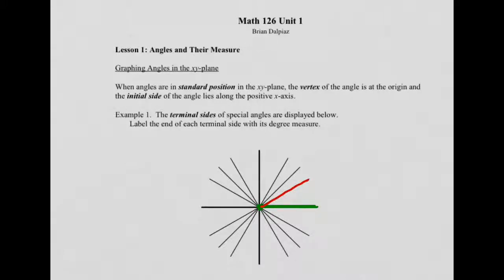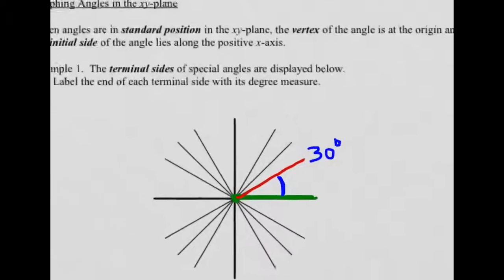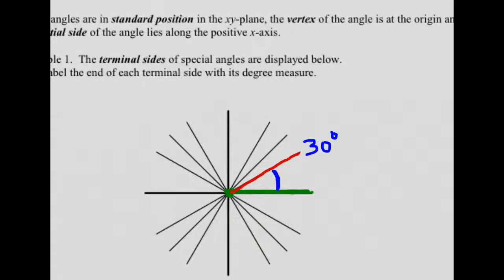Example 1 says the terminal side of special angles are displayed below. Label the end of each terminal side with its degree measure. That angle right here — we're talking about this angle — is a 30 degree angle. That's one of our special angles. The next angle, with its terminal side here, is a 45 degree angle. It cuts the first quadrant in half, so it's a 45 degree angle.